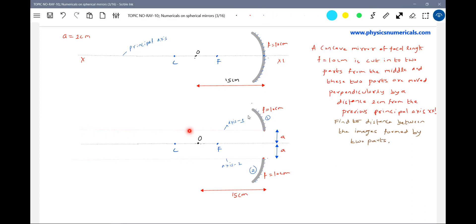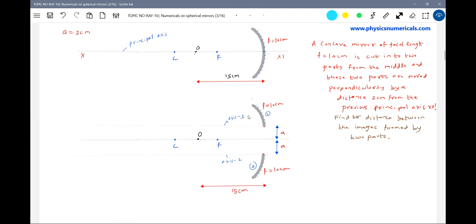This horizontal line is the principal axis of the upper part or mirror one. This is the principal axis of the lower part or the second mirror. Now let's find out the position of the image. The mirror formula will apply.